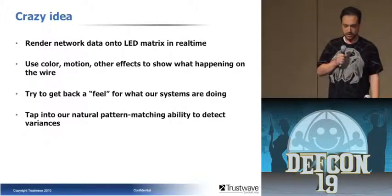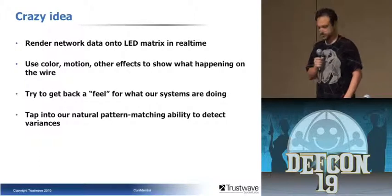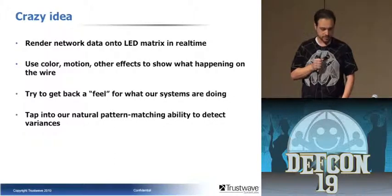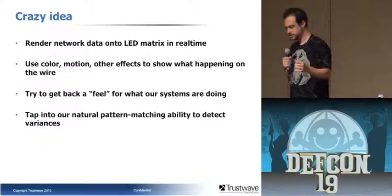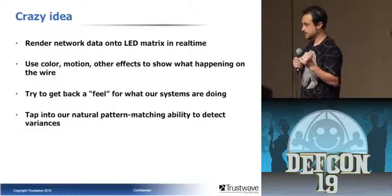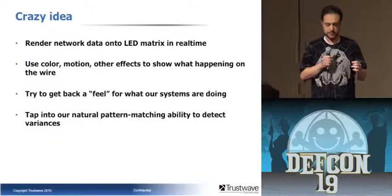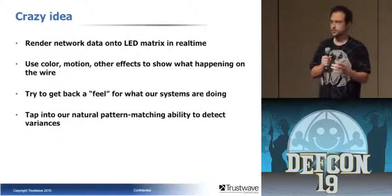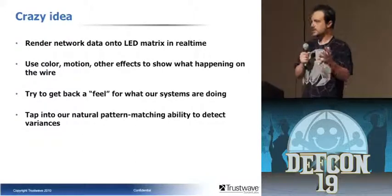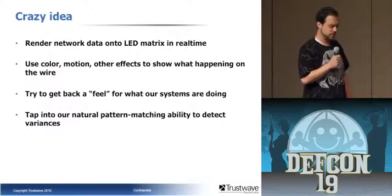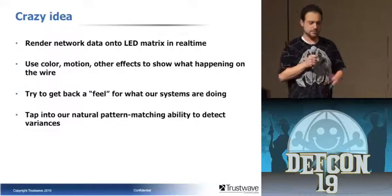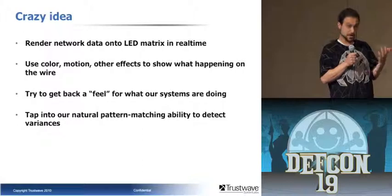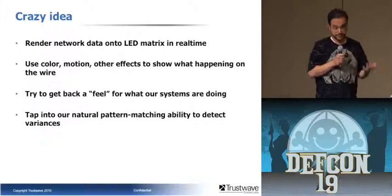The idea is to render network data on an LED matrix in real time. I want to use colors, motion, any creative thing I can put together to actually show what's happening. I want to tap into pattern matching — people are really good at this. It's like when something's wrong with the car: you turn the wheel a certain way and get a little vibration, a little feedback, and you notice it's different. It goes back to the cavemen — seven buffalo becomes two buffalo and you know something's wrong. It's a survival mechanism.